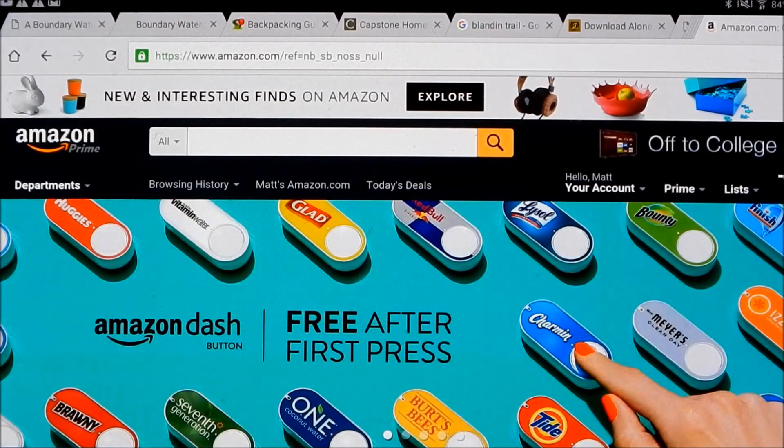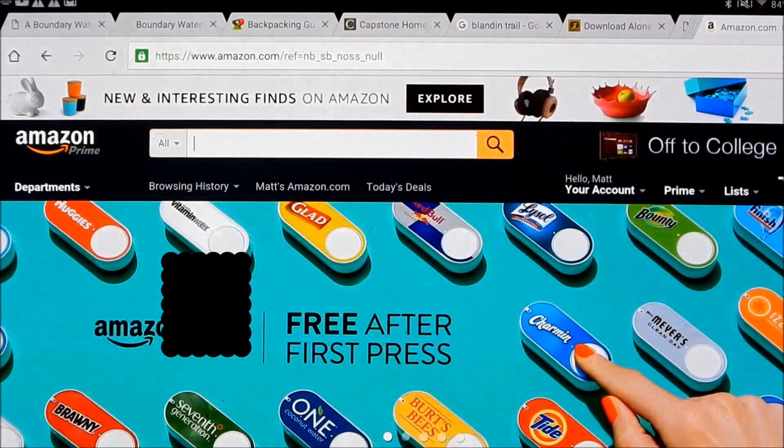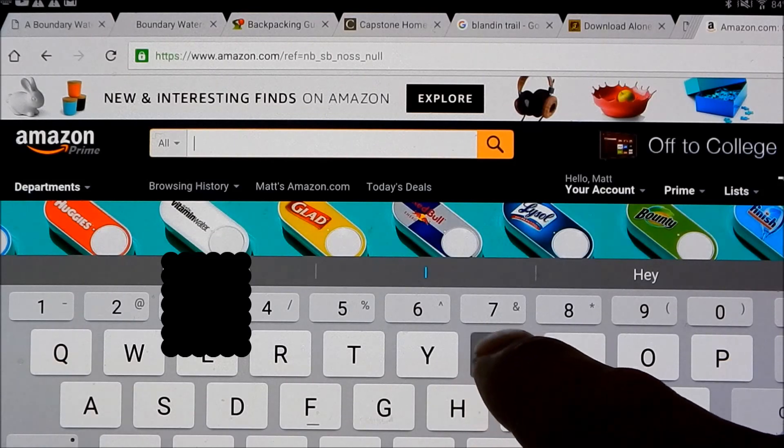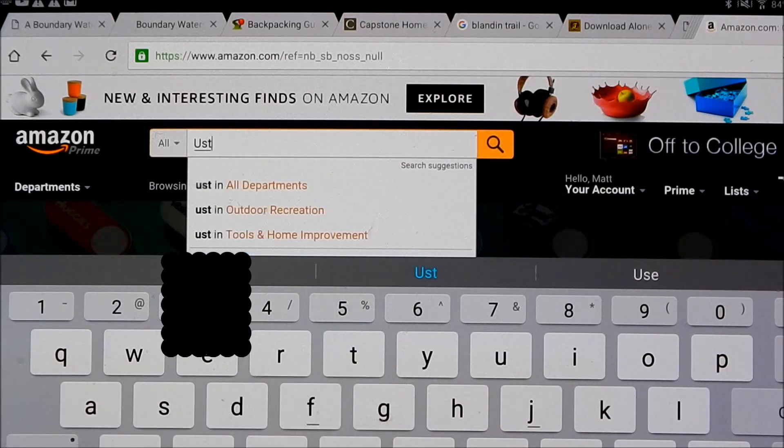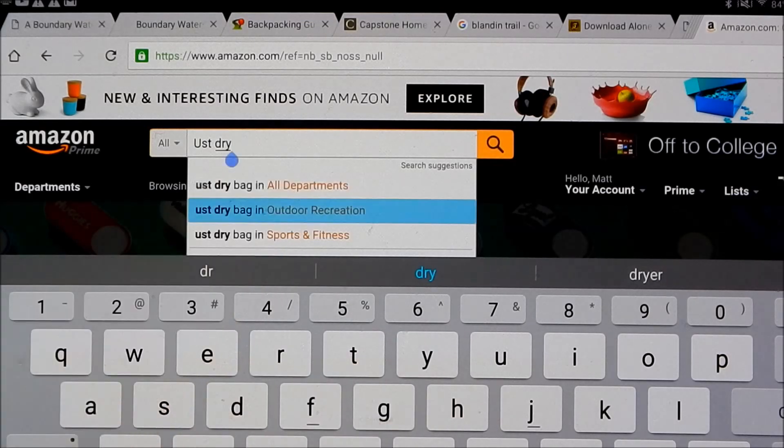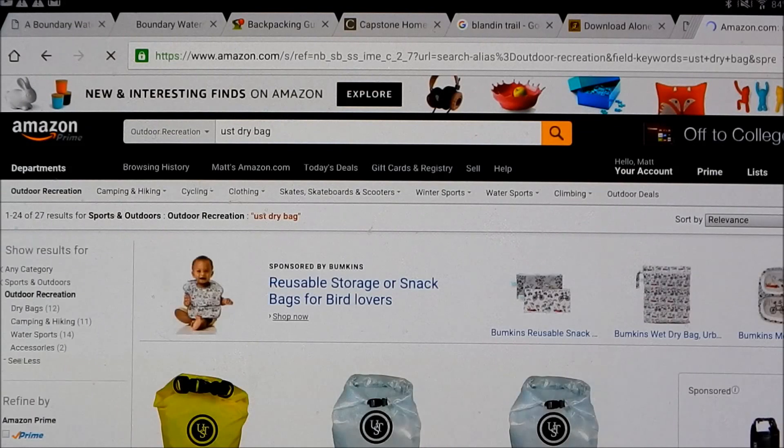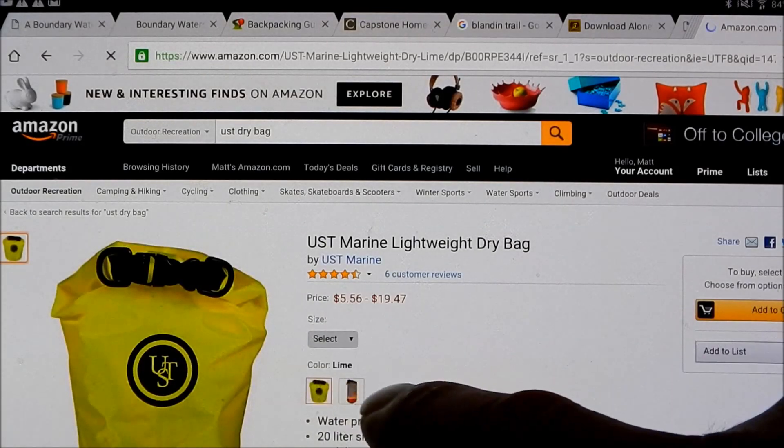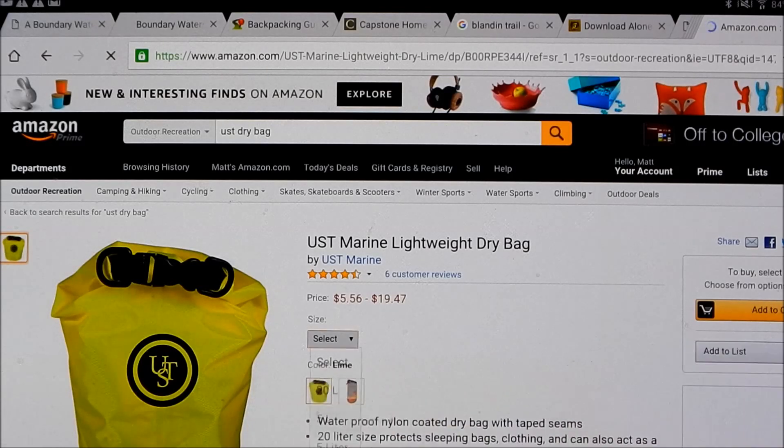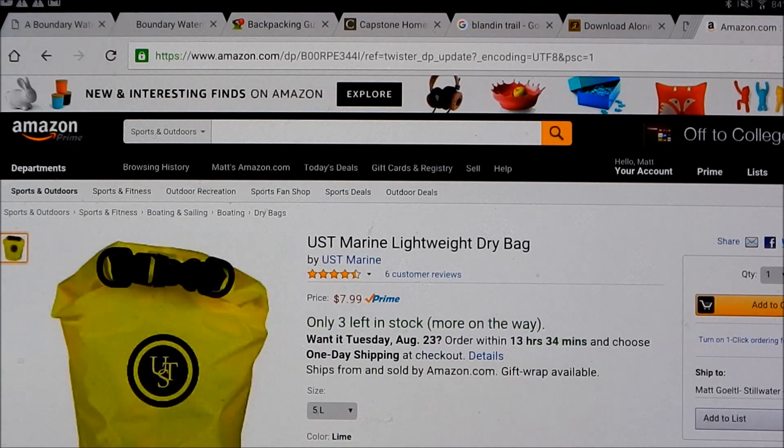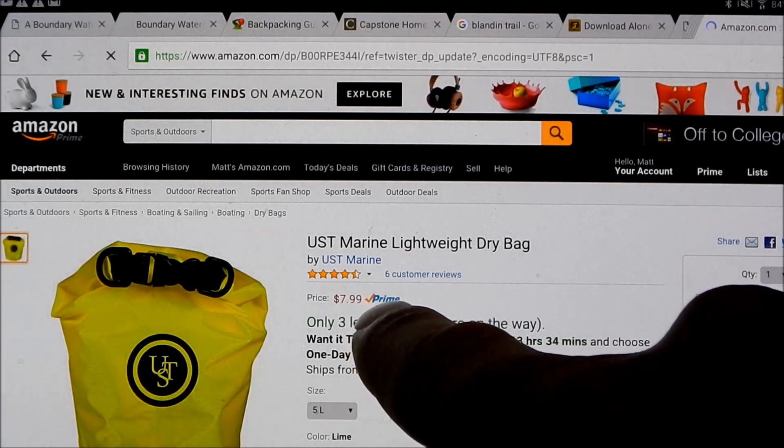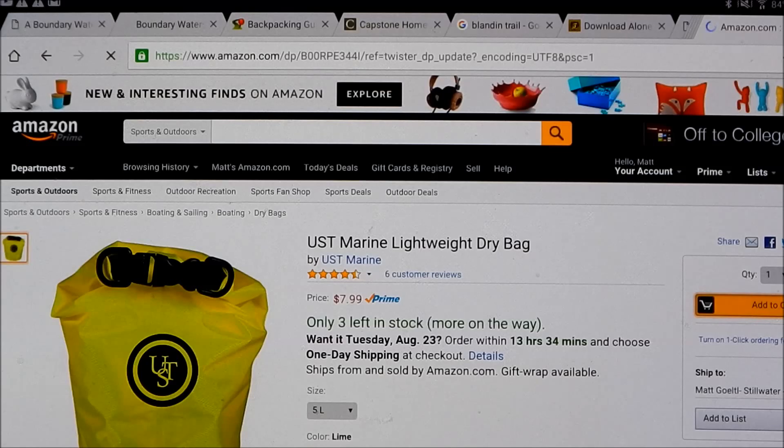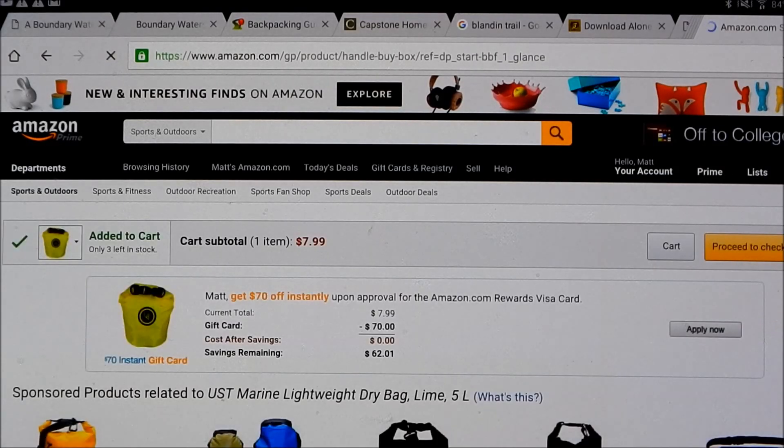Let me show you what I bought here. The first thing we need is a dry bag. So we'll use Amazon here and what I bought was a UST dry bag. You select the size - I went with the 5 liter. The other one is 20 liters which is very large. Obviously 5 liters works pretty well. As you can see it's $7.99 with Amazon Prime free shipping. Let's add that to the cart.